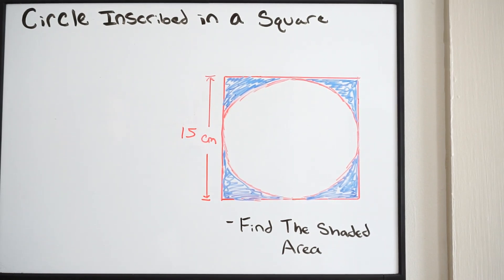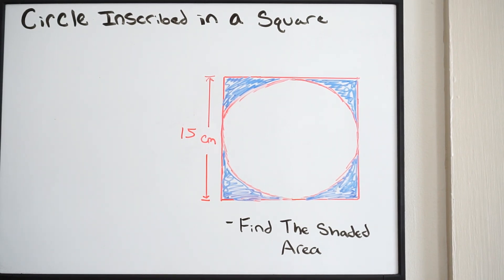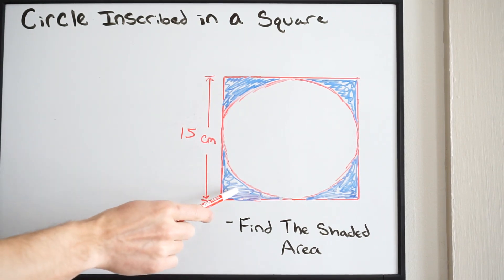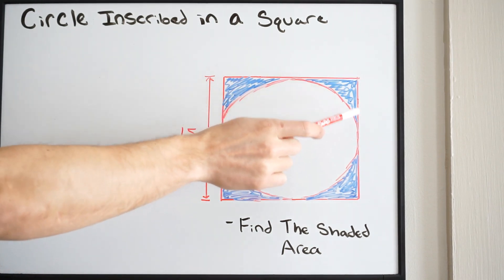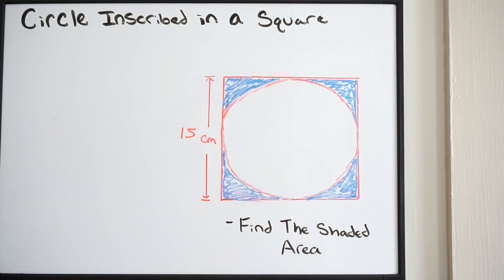In this problem we have a circle inscribed in a square and we're being asked to find the shaded area. If we take a look at what we have on the right here, shaded in blue, this is what we're trying to find — the area of that shaded region.